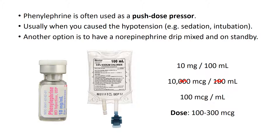Another option, more commonly used with intubations, is to have a norepinephrine drip mixed up before you start and just have it on standby. If it's hooked up into the IV, all you do is roll the lock up and open it, let it drip in, then roll it down and turn it off when their blood pressure comes back.